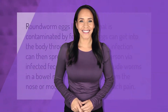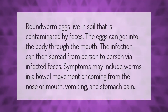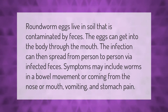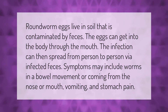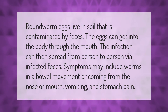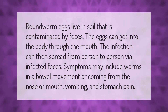Roundworm eggs live in soil that is contaminated by feces. The eggs can get into the body through the mouth, and the infection can then spread from person to person via infected feces. Symptoms may include worms in a bowel movement or coming from the nose or mouth, vomiting, and stomach pain.